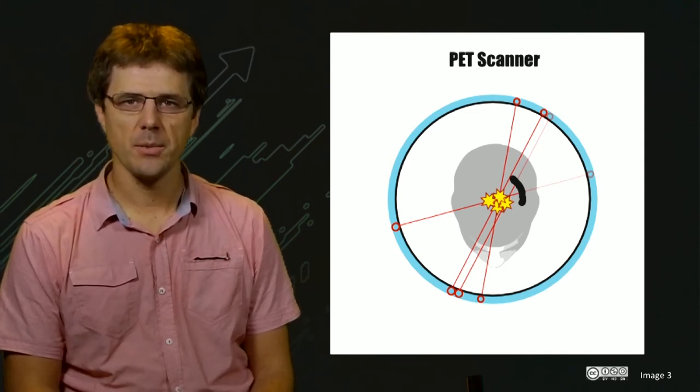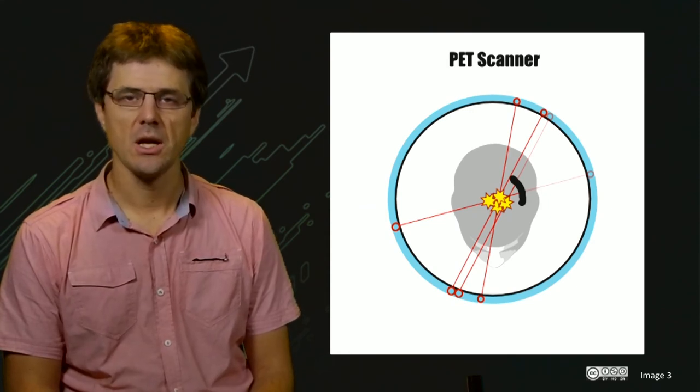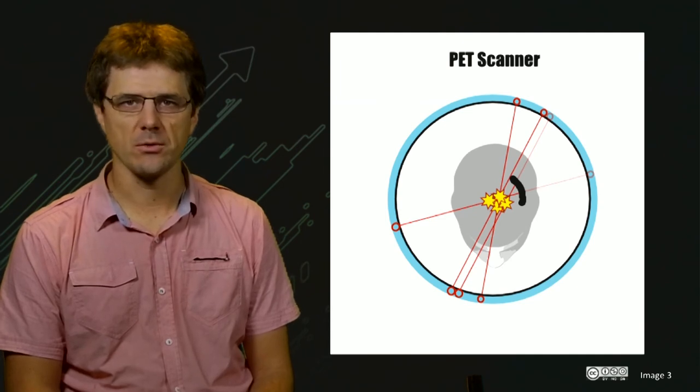In non-compensated PET images, this can be seen where the PET signal appears greater in tissue close to the surface and to a lesser degree towards the centre of the object.